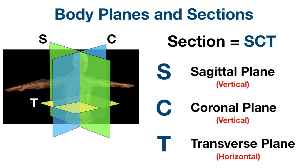Using the abbreviation SCT, you can also remember that the first two — sagittal and coronal — are vertical planes, and the last one — transverse — is a horizontal plane. We're now going to talk about each plane starting with the sagittal plane.